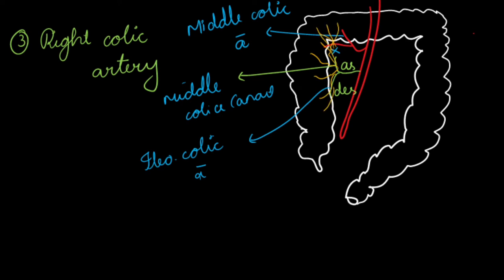The branches of the right colic artery supply the two-thirds of the ascending colon and the right flexure of the colon. We had already seen that the middle colic artery supplies the transverse colon, and this right colic artery mainly supplies two-thirds of the ascending colon and the right flexure of the colon.